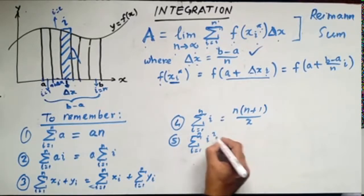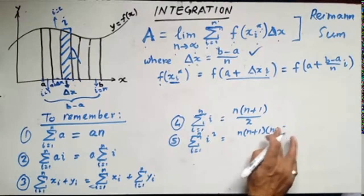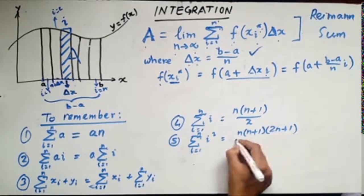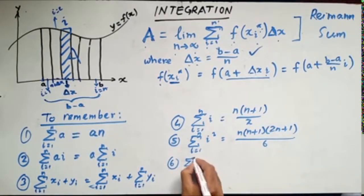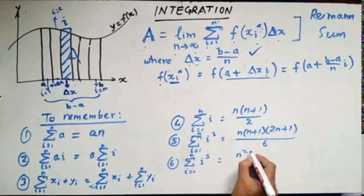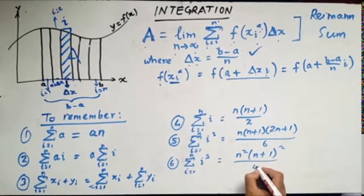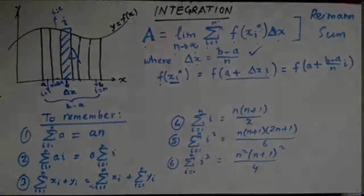Rule 5: the summation from i equals 1 to n of i squared equals n times (n plus 1) times (2n plus 1) divided by 6. Rule 6: the summation from i equals 1 to n of i cubed equals n squared times (n plus 1) squared divided by 4. These are the six rules we need to remember in order to solve integration problems by finding the area under the curve between points a and b.